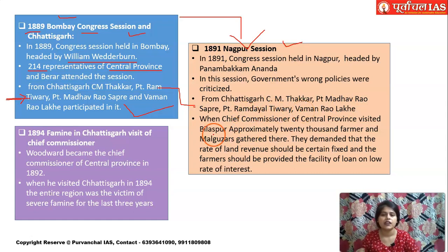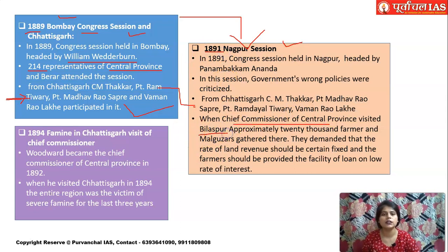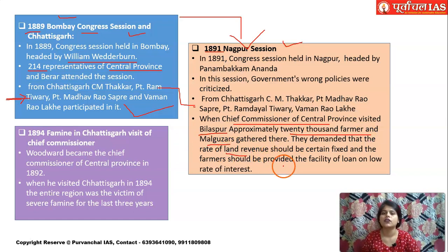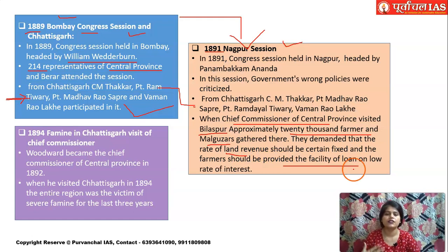During 1891, the Chief Commissioner of Central Province visited the Bilaspur area of Chhattisgarh and met almost 20,000 farmers and malguzars. They told him about their problems, such as high land revenue rates, and requested low-interest loan facilities to reduce their burdens.